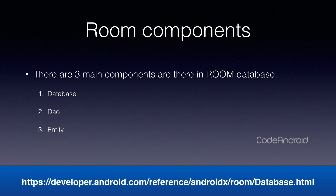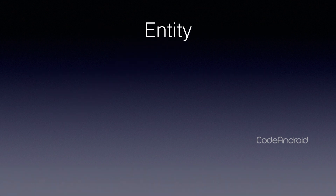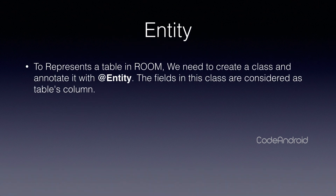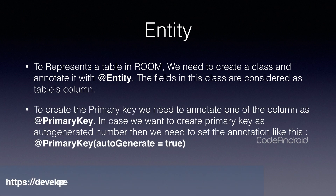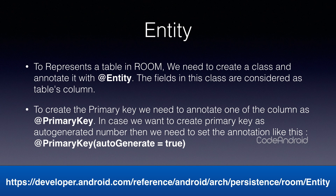First, we'll see about the Entity. To create a table in Room Database, we need to create a class and annotate it with @Entity. Whatever fields are in this class will be considered as columns for the table. To create the primary key, we need to annotate one of the fields with @PrimaryKey. In case we want to create the primary key as an auto-generated number, then we need to set the annotation like @PrimaryKey(autoGenerate = true).